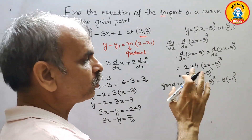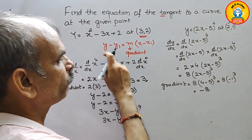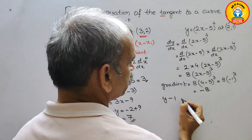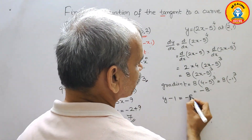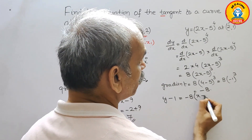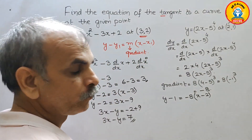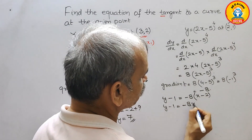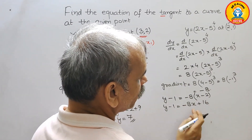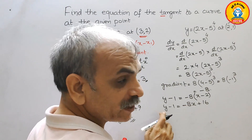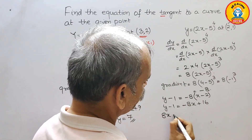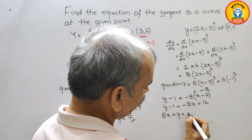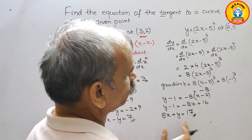Now for the tangent equation, we substitute into the formula. y minus y1, where y1 is 1, equals minus 8 times (x minus 2). Expanding: y minus 1 equals minus 8x plus 16. Bringing everything to one side: 8x plus y equals 16 plus 1, which is 17. So 8x plus y equals 17 is the tangent equation.